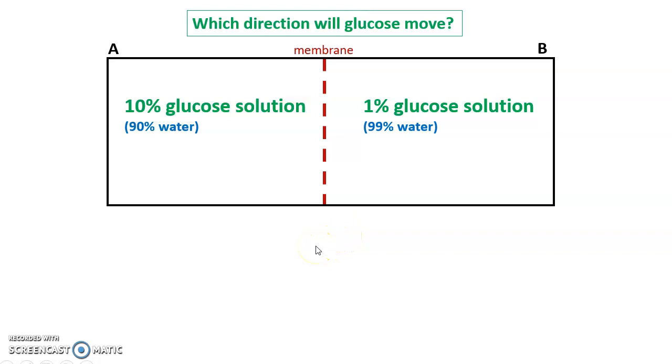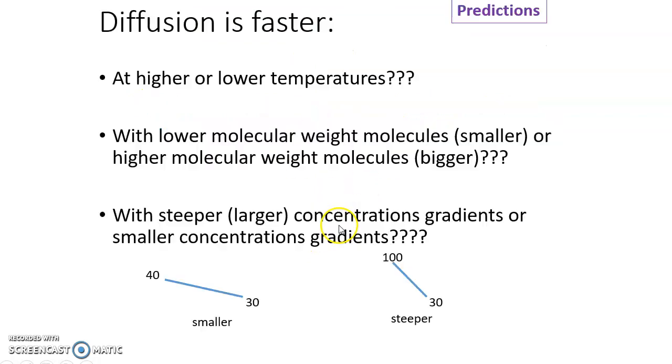For instance, which direction will glucose move? 10% glucose on one side, 1% glucose on the other. Here's the membrane that lets glucose pass through. You better say it's going from side A to side B. It will move to side B, high concentration to low concentration. Water will go the other way.